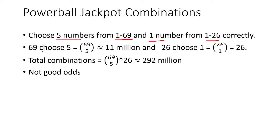So we're going to compute the number of ways that could happen. We first compute 69 choose 5 and that is around 11 million. And then we compute 26 choose 1 which is just 26. And then we can multiply those two numbers together and we'll get around 292 million possible tickets. So not very good odds for you to get one of those.